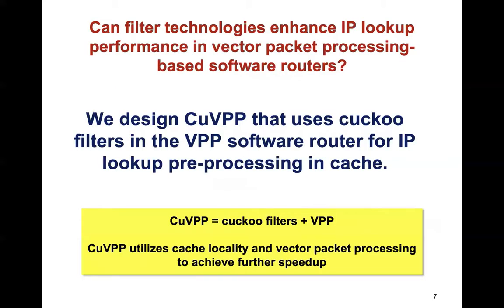To summarize, the research question in this work is: can filter technologies enhance IP lookup performance in vector packet processing-based software routers? In response to this question, we designed QVPP, which uses cuckoo filters in the VPP software router for IP lookup preprocessing in cache.